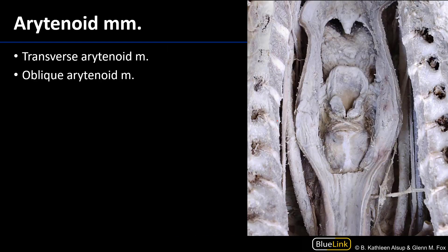The next muscles I'd like to show you are the arytenoid muscles. The arytenoid muscles get their name from the fact that they attach the arytenoid cartilages to one another. When they pull, they are going to adduct the arytenoid cartilages together. If we were to think of this from a superior view, those would be the vocal ligaments and these would be the arytenoid cartilages. By adducting those arytenoid cartilages together, one is going to adduct the vocal folds, and therefore make the rima glottidis narrower, which is the position for phonation, because those folds need to be relatively near each other in order to vibrate — they need to be in the path of the air.